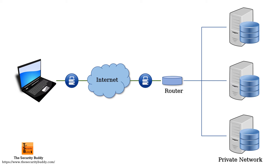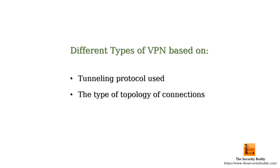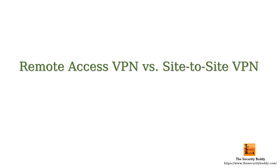There can be different types of VPN depending on the tunneling protocol used, the type of topology of connections, the OSI layer in which the VPN works, or the number of simultaneous connections. Depending on the type of topology of connections, there are two types of VPN.